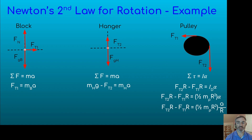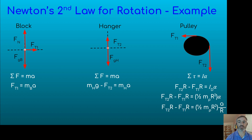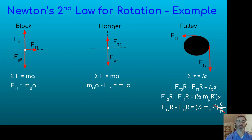Now we have a big equation to clean up. On the right side we have R in the numerator, R squared, and R in the denominator — one R cancels with the one in the denominator. Looking through our terms, every term has an R, both on the left side and on the right, so we can cancel out all the R's. Rewriting it, it looks just like a Newton's second law equation: Ft2 minus Ft1 equals one half times the mass of the pulley times the acceleration, and all three accelerations are the same.